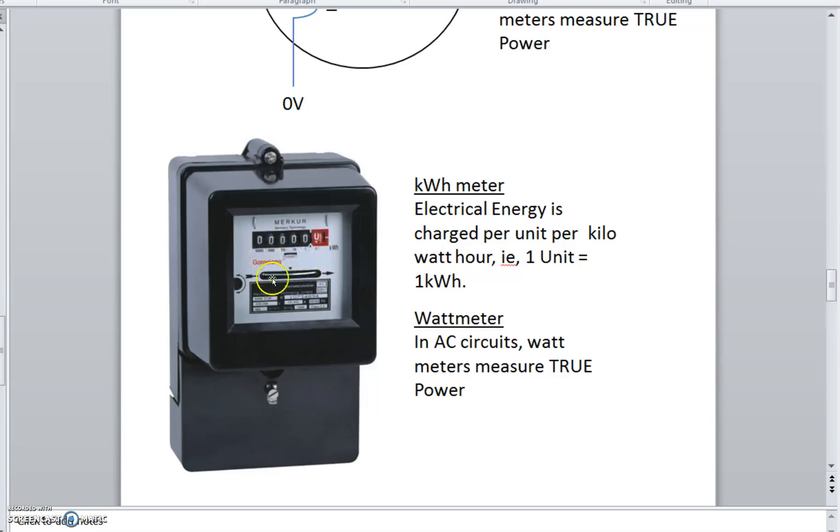The greater the current, the quicker the disc rotates because of the stronger magnetic field. That in turn drives some gears that are internal and hence you get your display. These are still used. In fact, I have one in my home as we speak. But they are slowly getting replaced by digital smart meters.